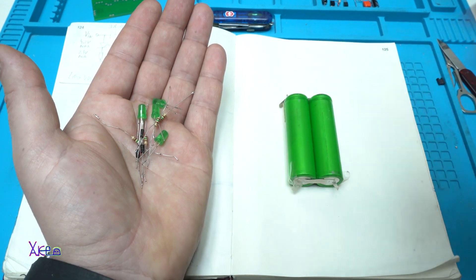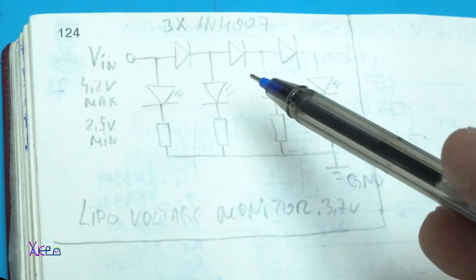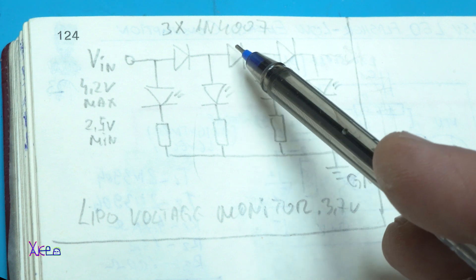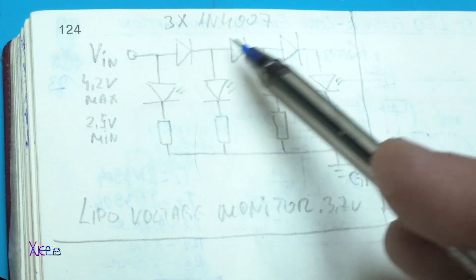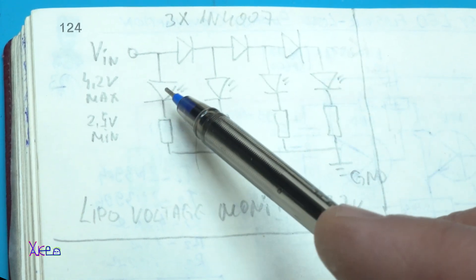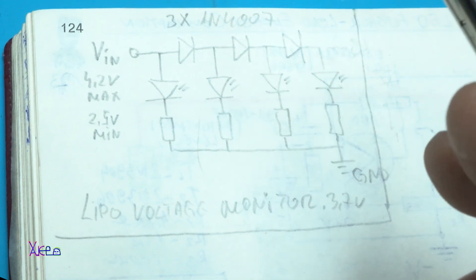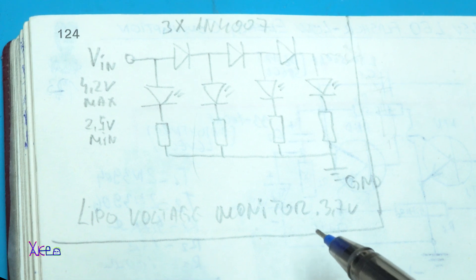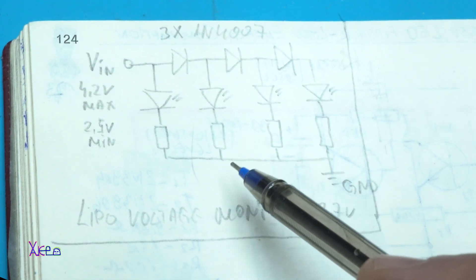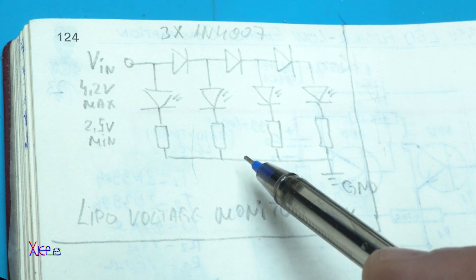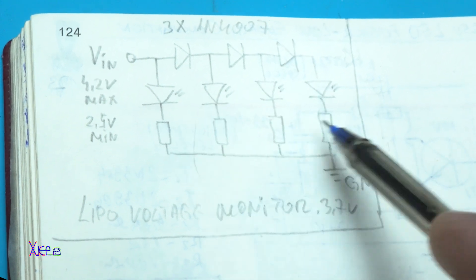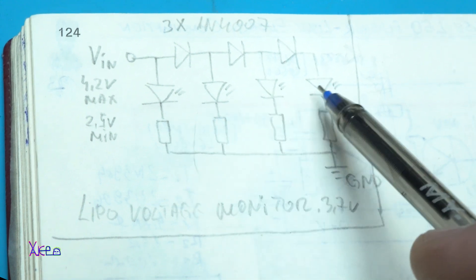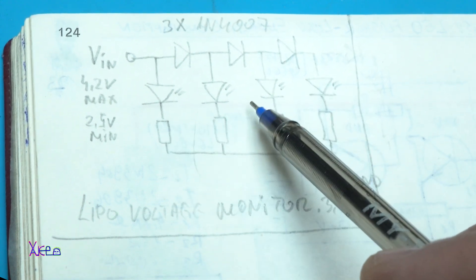Let's start. Okay, here is the simple circuit. We need three 1N4007 diodes, four LEDs, and four resistors. You can use them from 100 to 150 ohms for each LED. The LEDs need to be green because of the voltage drop.